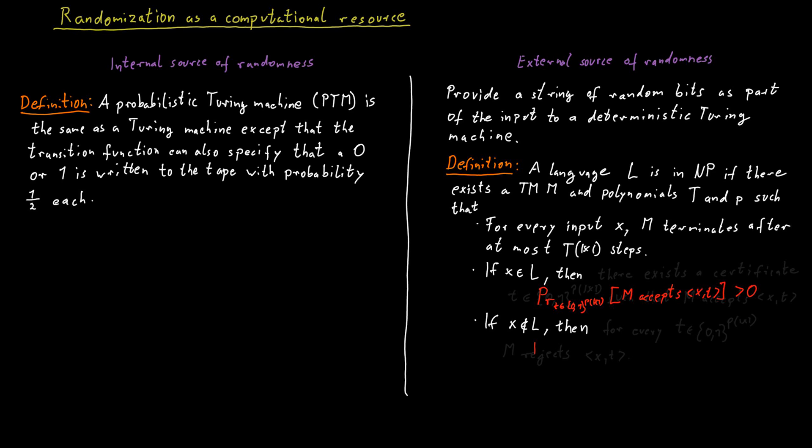But if the word does not belong to the language, then no matter what input this machine gets, no matter what the random string of bits will be, the machine will always reject. So we can actually characterize the class NP in this way. It's a completely equivalent way of defining NP through the use of random bit strings rather than certificates.